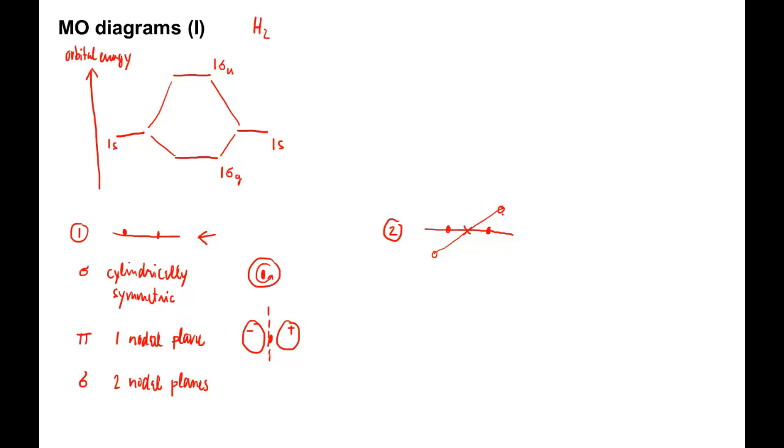If these two values are identical, the MO is symmetric with respect to inversion and is labeled with a subscript G, which stands for gerade, the German word for even. Here is an example.